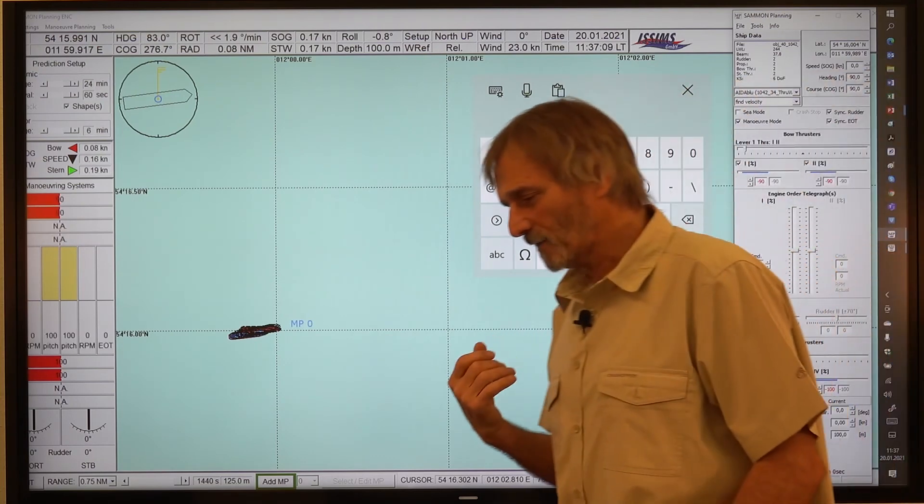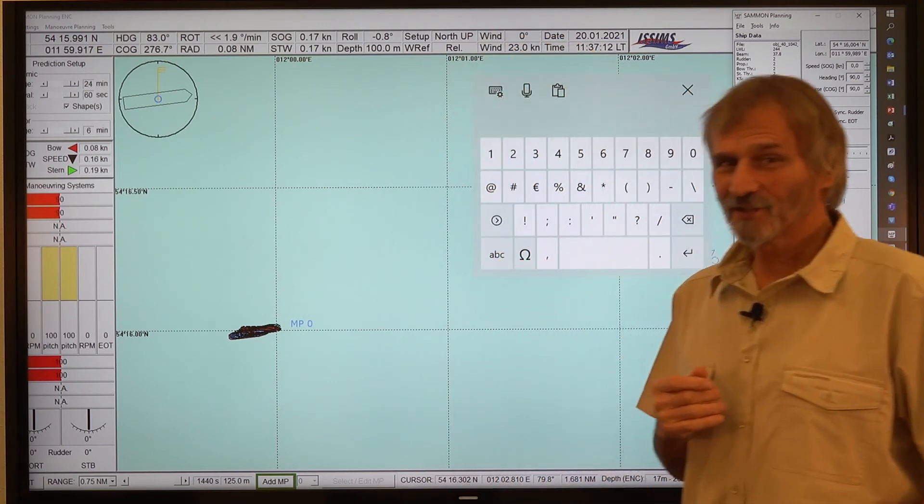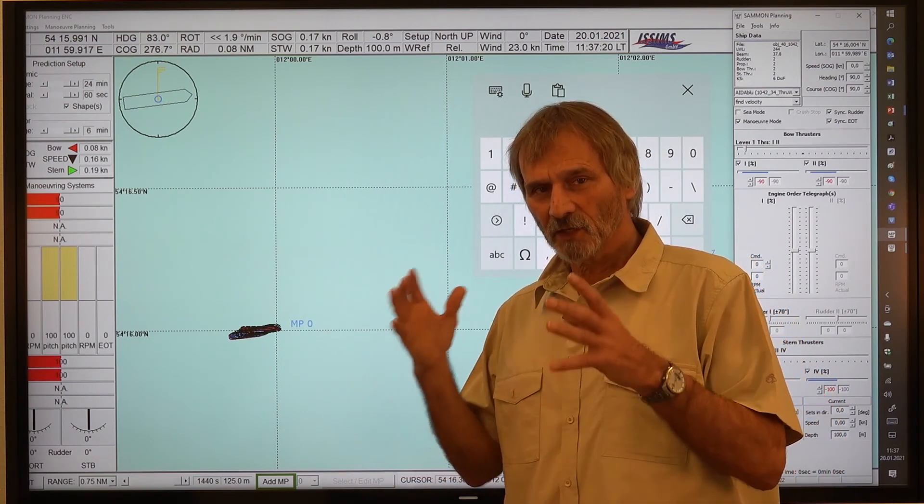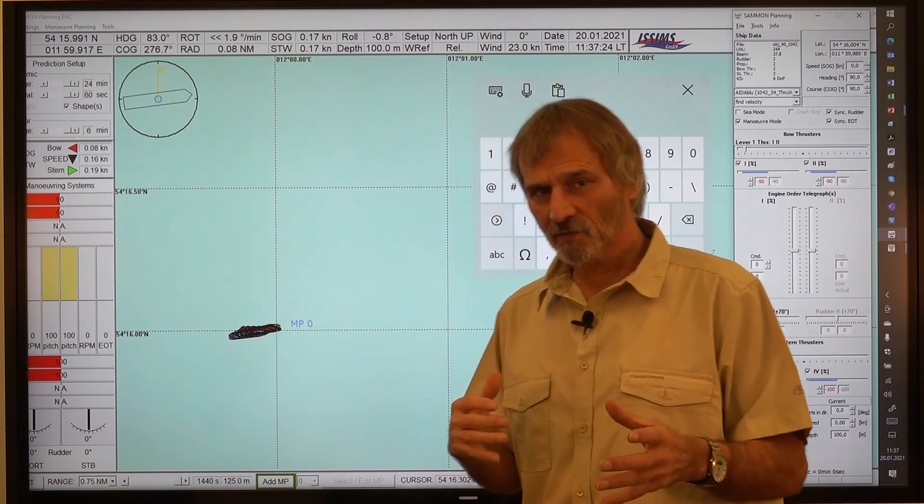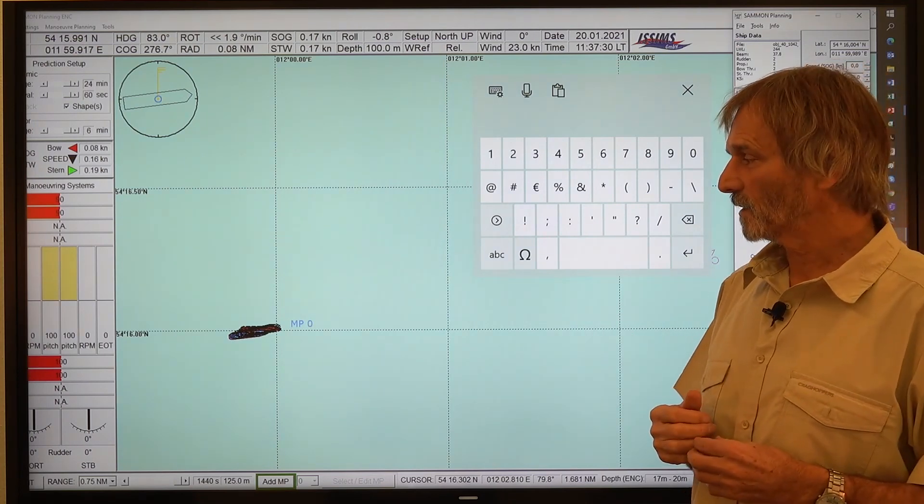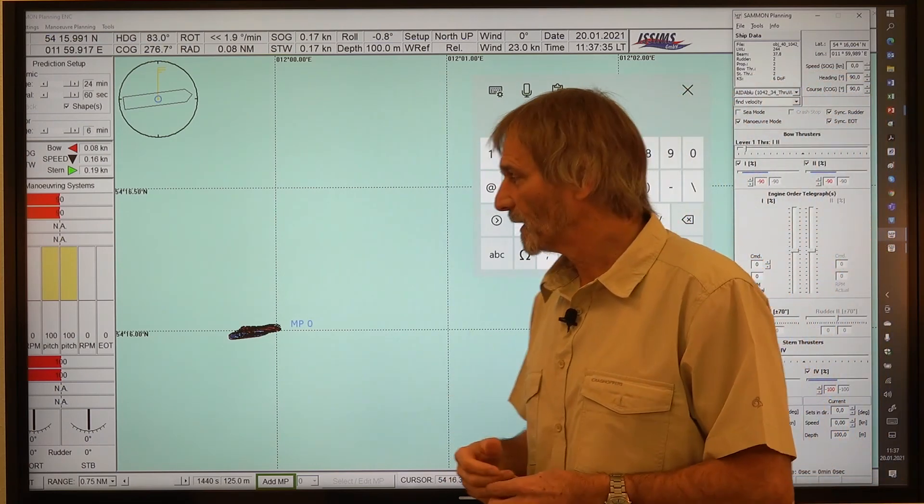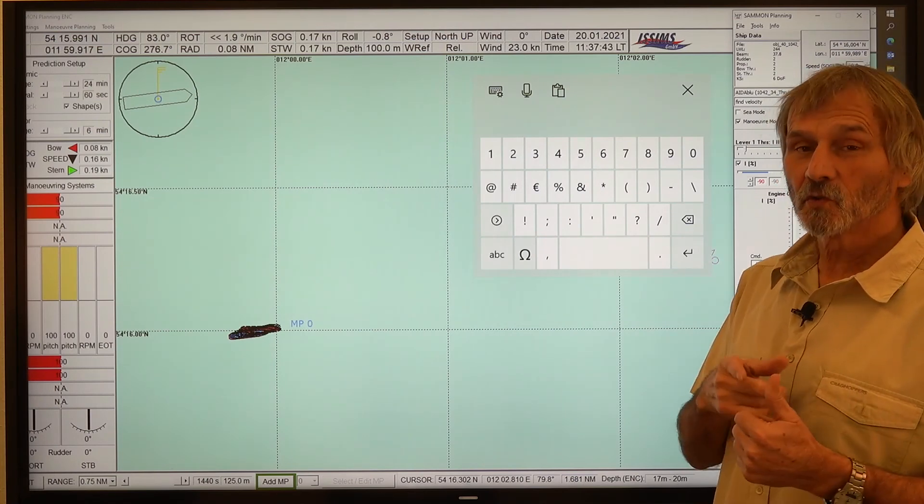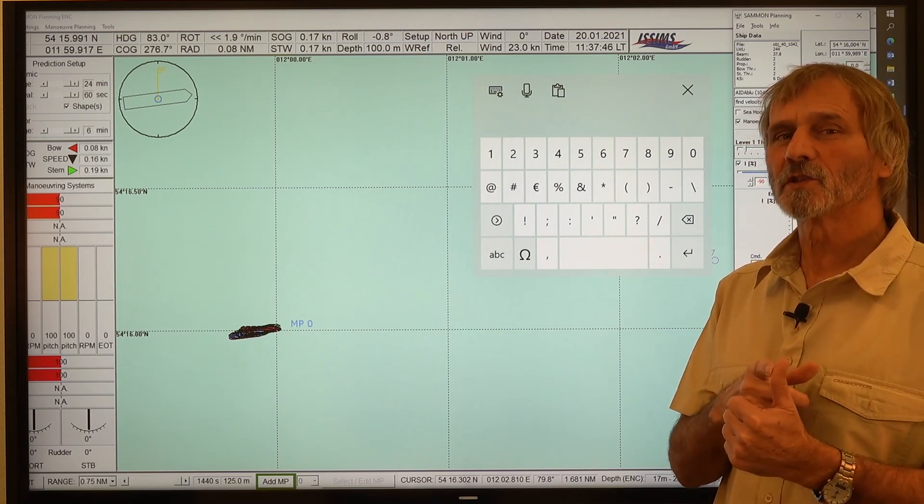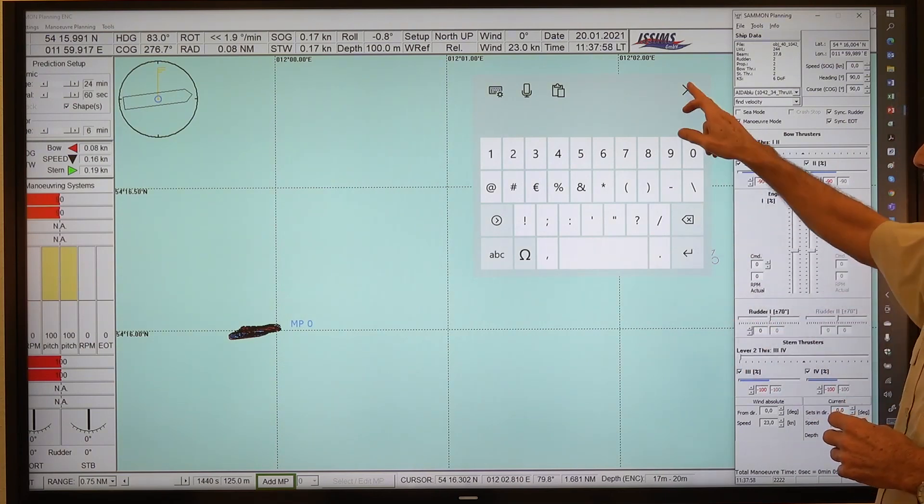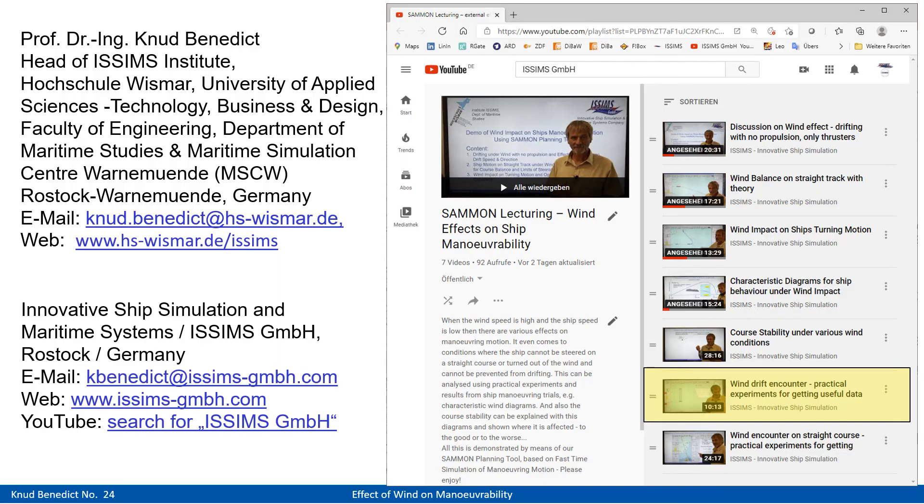So this is a good exercise with your ship. If you have the chance to do that, to estimate what your maximum drifting speed is by use of the thrusters. Or if you don't have bow and stern thrusters, you can use also your maybe with a twin screw ship, rudder and propulsion for crabbing. And so the maximum crabbing speed is very important to encounter current. So you immediately know what current speed you can manage. Or to estimate roughly the wind speed of, in this case, 23 knots. This might help in certain conditions.